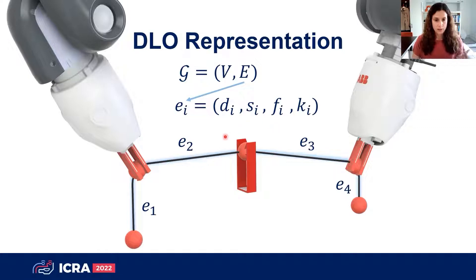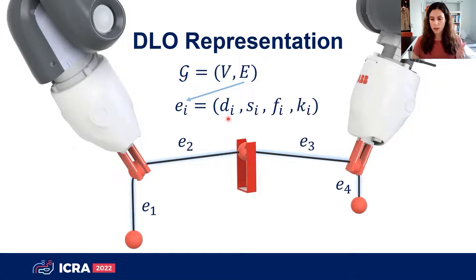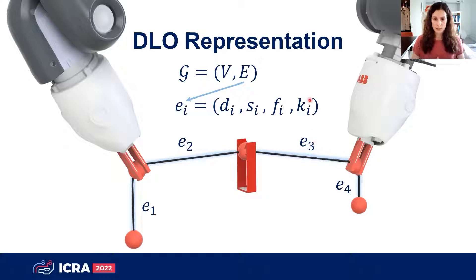Each edge contains information about the distance between two points, as well as a measure of the sag to evaluate how accurate that distance is. If there is a lot of tension there needs to be some sag, which means we cannot trust our distance estimate and should tension more. We also have a scalar force felt along that edge and an estimate of elasticity, needed mostly for tensioning primitives which can easily trigger an emergency stop on the robot — and we want to avoid that.